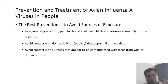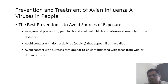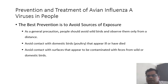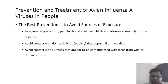The best prevention for H5N1 is to avoid the source of exposure. As a general precaution, people should avoid wild birds and observe them only from a distance. Keeping animals in zoos can also be dangerous. Avoid contact with domestic birds that appear sick or dead, and avoid contact with surfaces contaminated with wild or domestic bird secretions. Because of increasing close contact between wild animals and humans, we are at the mercy of nature when it comes to novel virus infections.